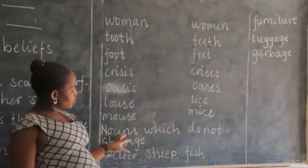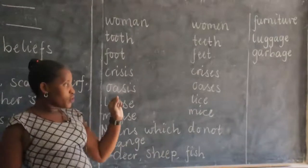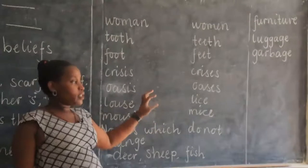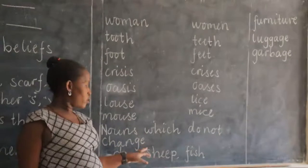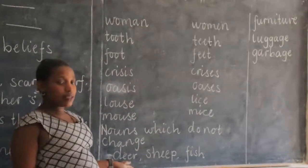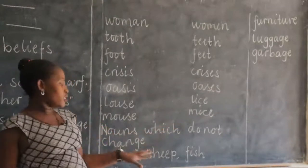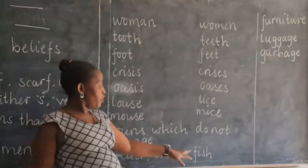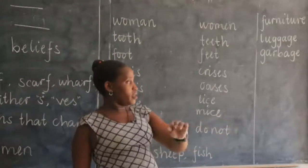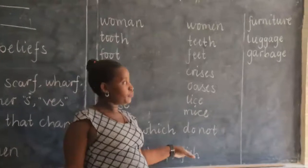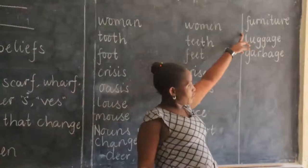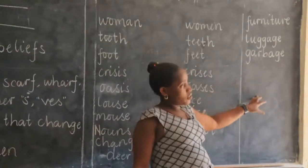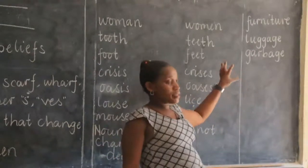Another category: we have nouns that can be counted, but when you count them, they still remain in singular form. They are not uncountable — we can count them, but the word does not change. For example, deer — you can count them, but even if there are 100, it remains deer. Sheep remains sheep however many there are. Fish remains fish — when you go to the market stall, you find many of them but it is still fish. Furniture remains furniture. Luggage remains luggage. Garbage remains garbage. Baggage remains baggage. They can be counted but remain unchanged.